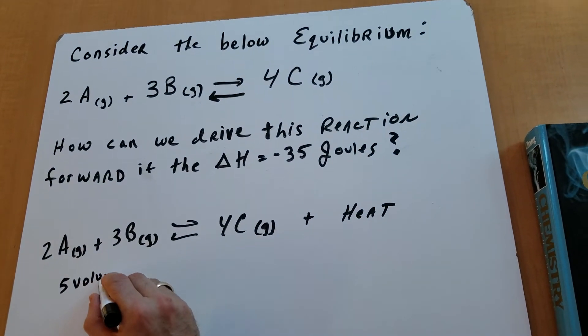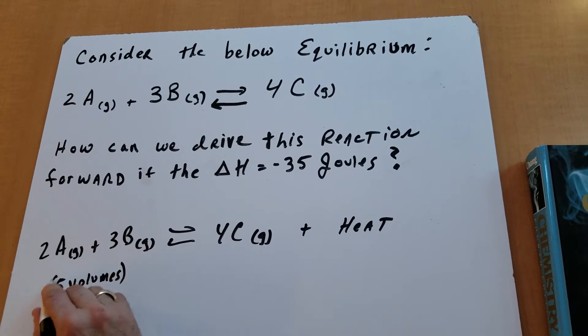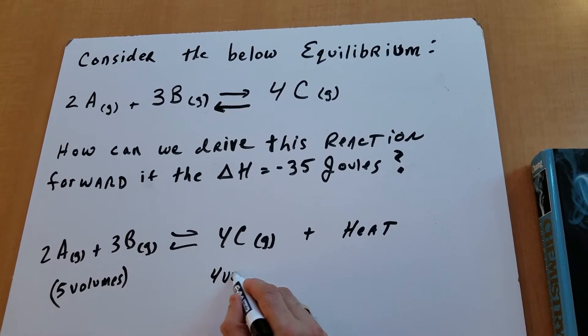So instead of saying that 2 plus 3 or 5 moles, I can say there's 5 volumes of gas. So I'm going to write 5 volumes on this side. And this side of the equation, there's 4 volumes.